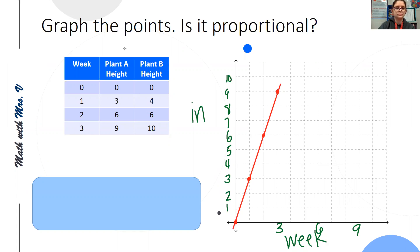And then plant B will make that blue. At week zero, it was also zero inches. At week one, it was four inches. At week two, it was six inches. And at week three, it was 10 inches.